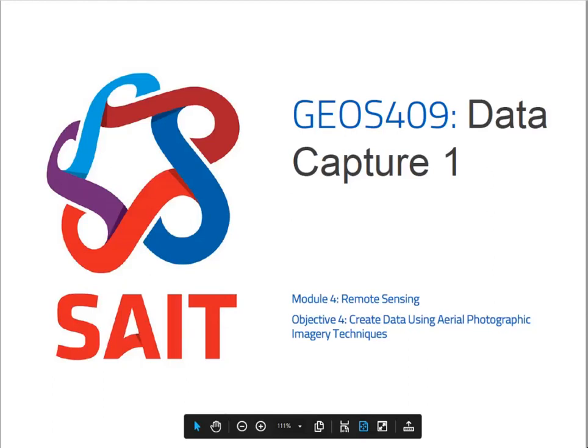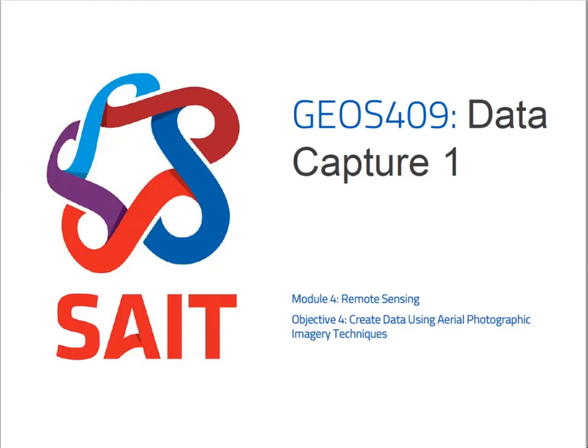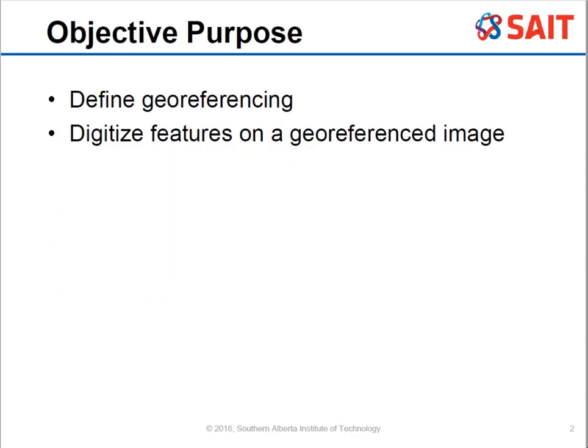Welcome to Module 4, Objective 4. This time we're going to be looking at how to create data using aerial photography. The two objectives are defining geo-referencing and then digitizing features on a geo-referenced image.